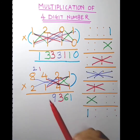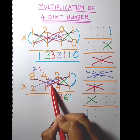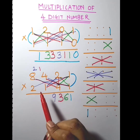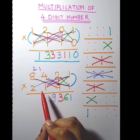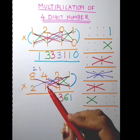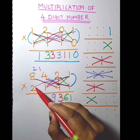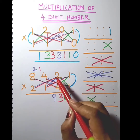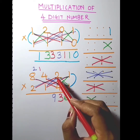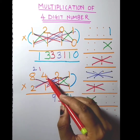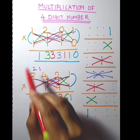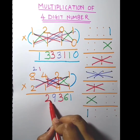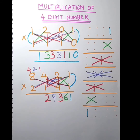Now 8 into 4 is 32, plus 4 is 36, plus 4 is 40, plus carry 2 is 42. Now carry 4.